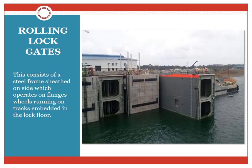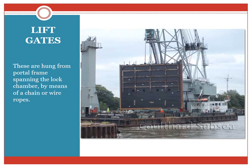Rolling lock gates: this consists of a steel frame shuttered on one side which operates on flanged wheels running on tracks embedded in the lock floor. In the open position, the gate is housed in a recess in the wall. The lock chamber is closed by rolling the gate on its track out of the recess. Lift gates: these are hung from a portal frame spanning the lock chamber by means of chain or wire ropes. Projection at the top of the vessel will be a hindrance for movement under the gate in its lifted position.